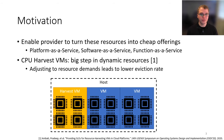We took inspiration from the CPU-based harvest VMs, which were a big step in running dynamic resources inside of the cloud platform area. These are evictable VMs that can have their resources adjusted based on local host demand, so they can give a lower eviction rate over something like a spot VM that doesn't do this.